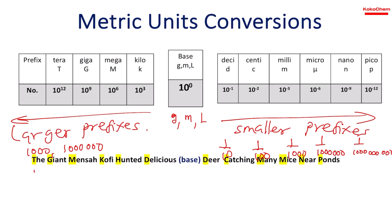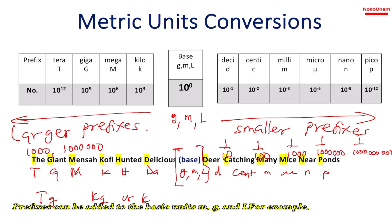That's Tera, Giga, Mega, Kilo, Hecto, Deka - these are your base units like grams, meters, and liters - then Desi, Centi, Milli, Micro, Nano, and Pico. So you can have kilogram, kilometer, hectoliter, centimeter, or micrograms.